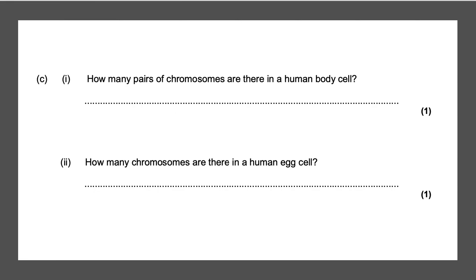Next question: how many pairs of chromosomes are there in a human body cell? The keyword here is pairs of chromosomes — the answer is 23 pairs of chromosomes, and that gives you one mark.